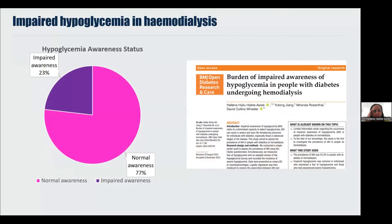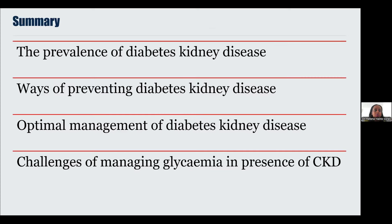I conducted a survey with an MSc student from UCL in one of our satellite dialysis units to assess the prevalence of impaired hypoglycaemia awareness — the diminished ability to recognise hypoglycaemia, which can be disabling for patients. Our findings revealed that 23% of people with diabetes undergoing haemodialysis and treated with insulin or sulfonylurea had impaired hypoglycaemia awareness. We published this in BMJ Open, and this work has helped us guide the prioritisation of continuous glucose sensors in our unit, with really positive feedback from patient groups.